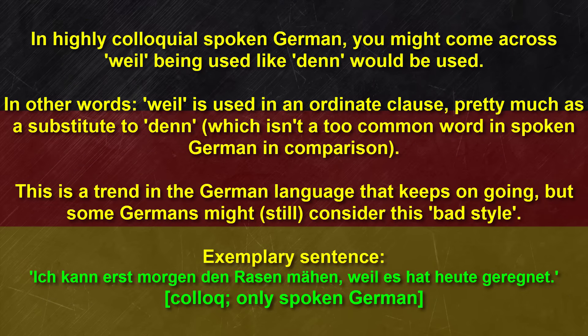Interestingly enough, you might come across some Germans using crossover structures — using 'weil' like a conjunction, basically like 'denn', in an ordinate clause, which wouldn't be the case normally. For example: 'Ich kann erst morgen den Rasen mähen, weil es hat heute geregnet.' Sounds a bit strange, doesn't it? However, be careful — this phenomenon is highly colloquial and informal. My advice to you as learners: focus on the main use of 'denn' and 'weil' first, then proceed to more colloquial things.